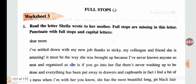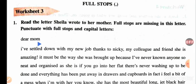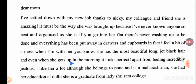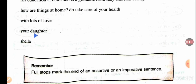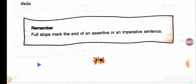Now read the letter Sheila wrote to her mother. Full stops are missing in this letter — punctuate with full stops and capital letters. It's quite easy. 'Dear Mom' — 'D' and 'M' will be capital. 'I' is always capital. 'I have settled down with my new job, thanks to Nicky' — Nicky is a name, so 'N' will be capital. 'Nicky, my colleague and friend, she is amazing.' 'Your daughter' — 'E', 'Y', and 'D' will be capital, 'S' will be capital. Full stop marks the end of an assertive or an imperative sentence.